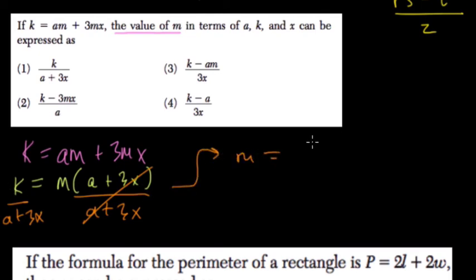m is equal to what? k divided by a plus 3x, which is choice number one. All right.